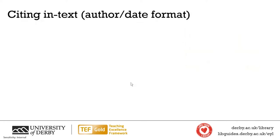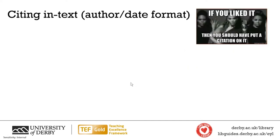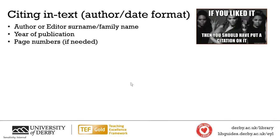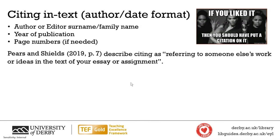Now I'll start covering each of those, beginning with the in-text citation. In Harvard and APA, any time you use a source or an idea, you need to put a citation on it. When you use a citation, you need to include first the author's name, secondly the year of publication, and thirdly the page numbers where needed — I'll discuss when you do and don't need page numbers later. Here's an example: Pears and Shields, 2019, page seven. That's an example of an in-text citation.